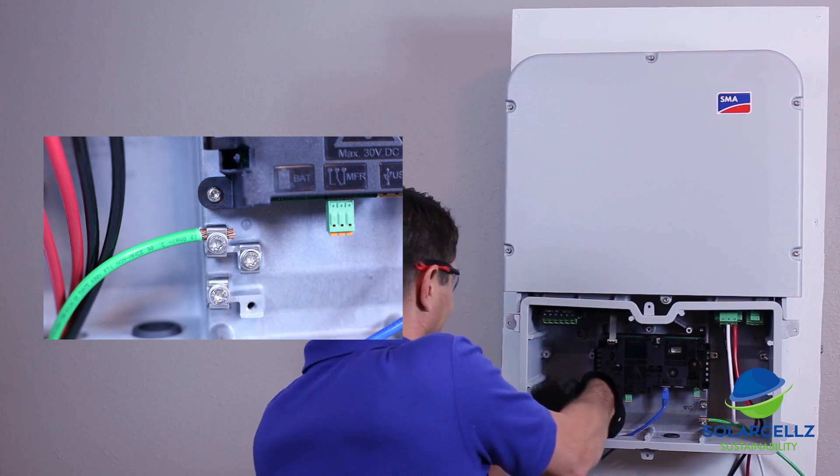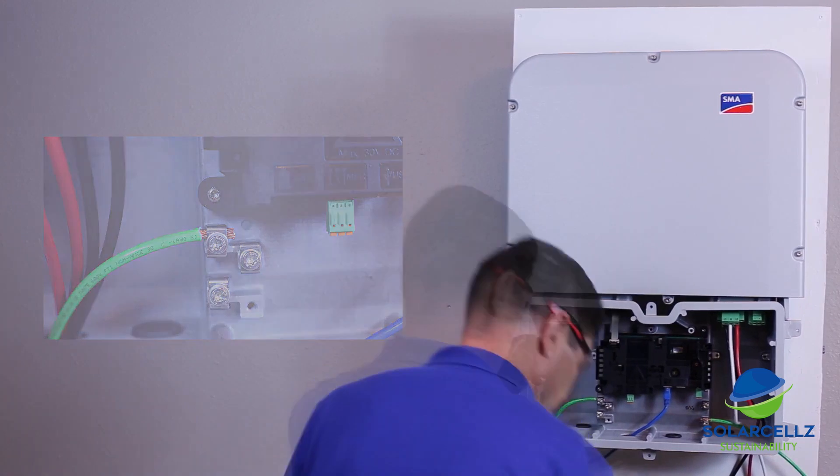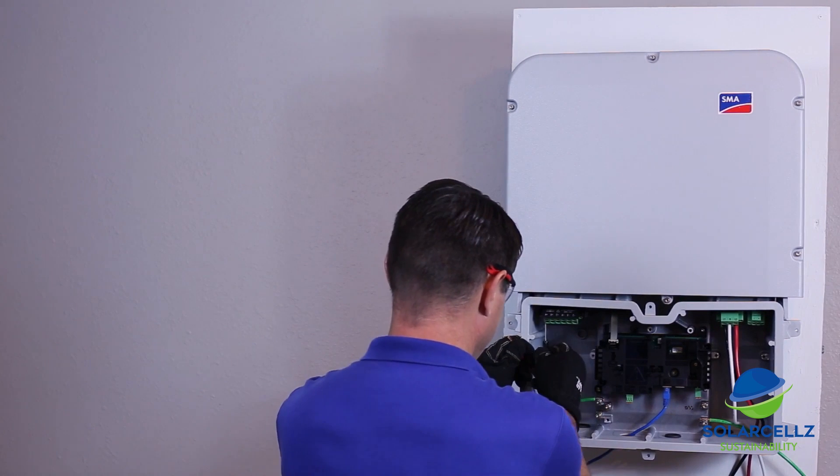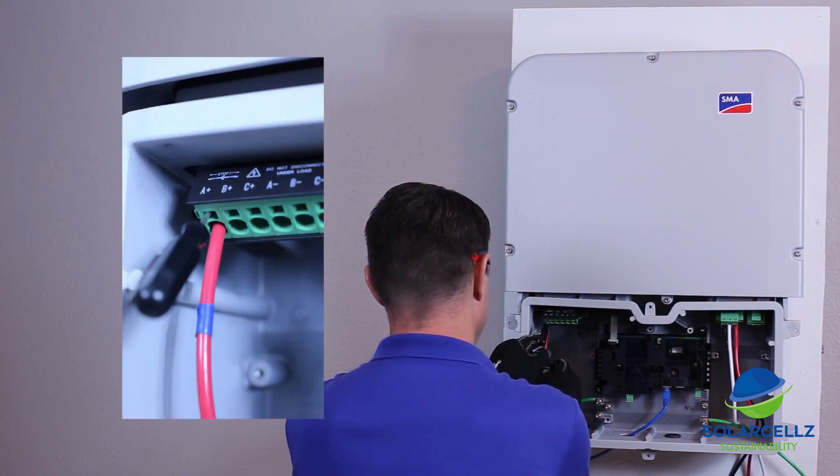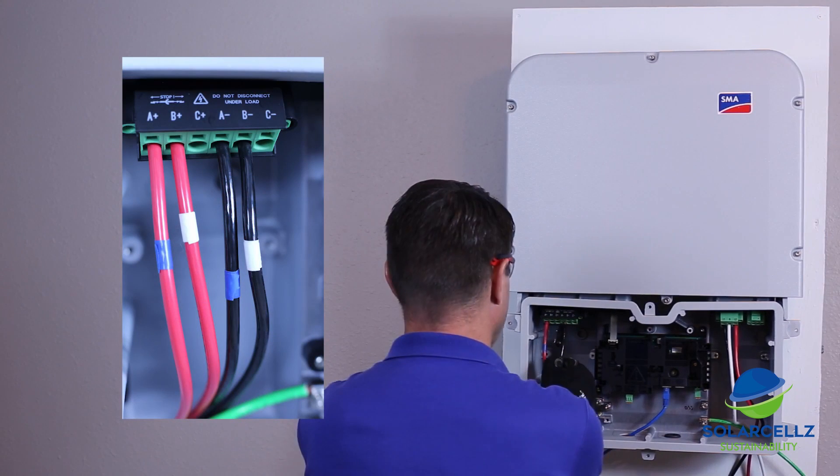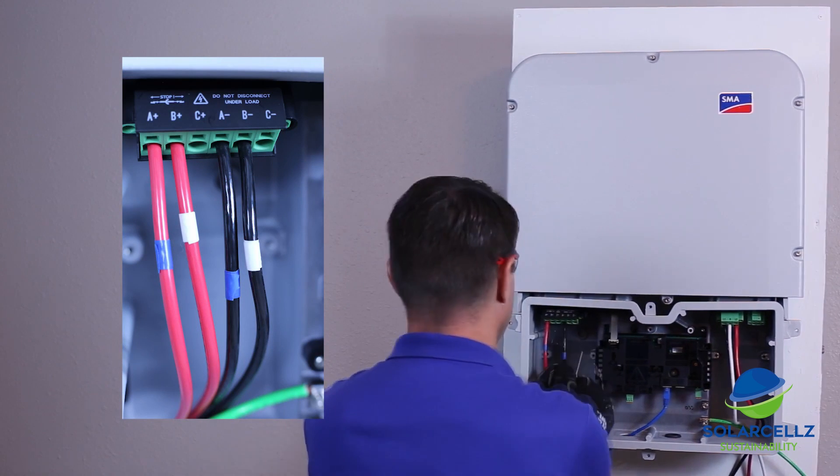Attach the DC ground conductors in the appropriate positions, ensuring the conductor is seated between the clamp and the washer and tight. Insert the DC positive and negative conductors for each string into the appropriate positions on the DC plug. Ensure each conductor polarity is correct and the string conductor pairings are correct.